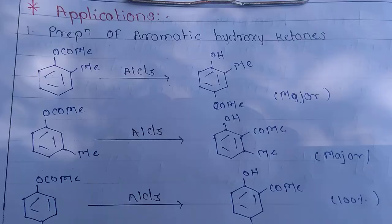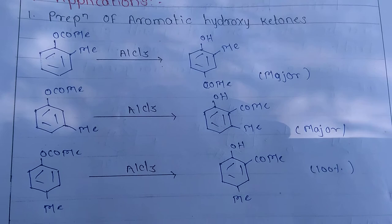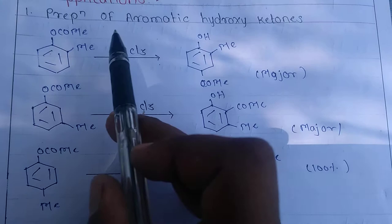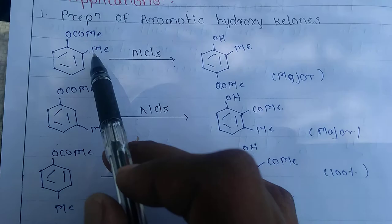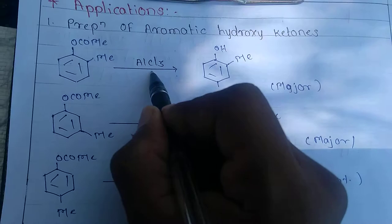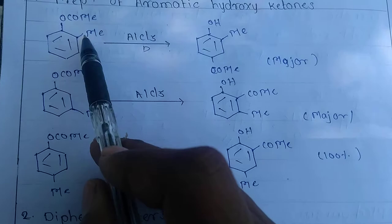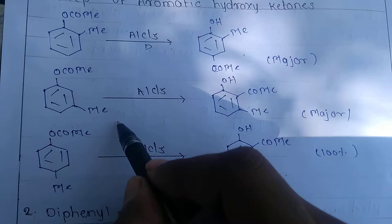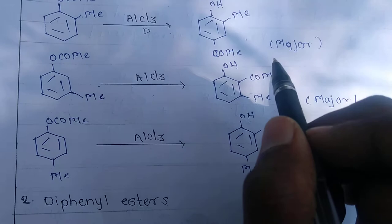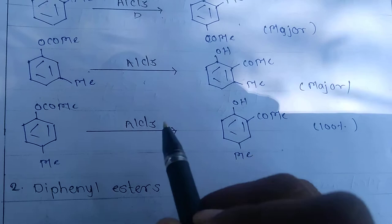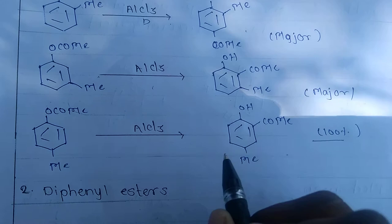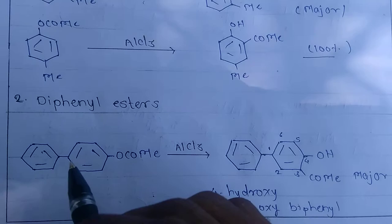Let's discuss the applications of Fries rearrangement. The first important application is the preparation of aromatic hydroxy ketones. A phenolic ester on heating with AlCl3 gives para-acylphenol. If the ortho position is occupied, then the para product is major. If the meta position is occupied, then the ortho product is major. If a certain condition applies, 100 percent ortho product is obtained.